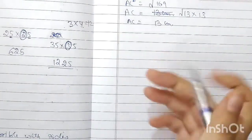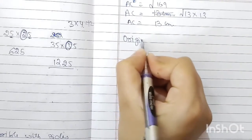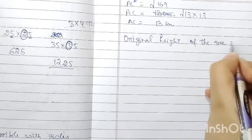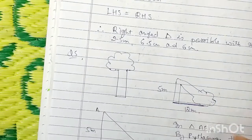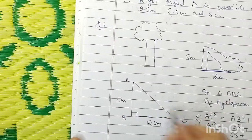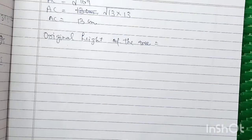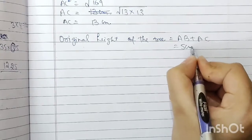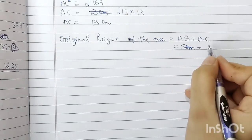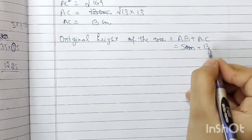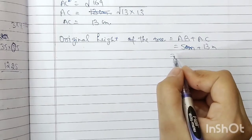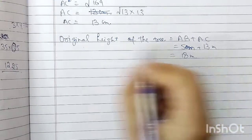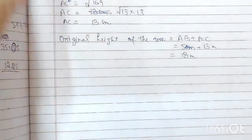Now we are asked: what is the original height of the tree? The original height is AB + AC. AB is given as 5 meters and AC is 13 meters. Adding both, the answer is 18 meters. So the original height of the tree is 18 meters.